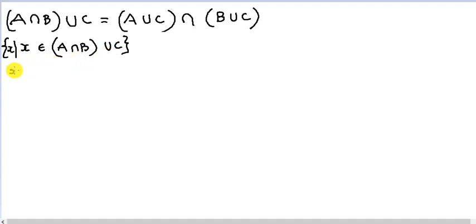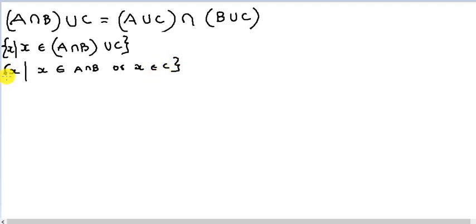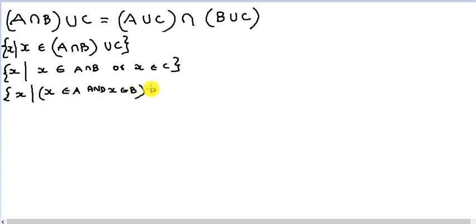We expand this as: x such that x belongs to A intersection B, or x belongs to C. And what does this mean? It means x such that x belongs to A and x belongs to B, or x belongs to C. So it says x belongs to C or x belongs to A and B.